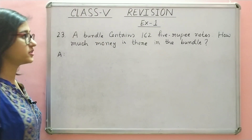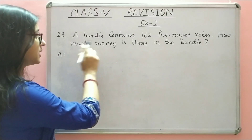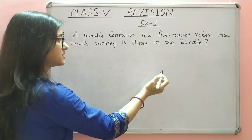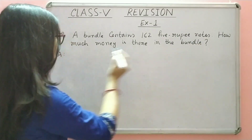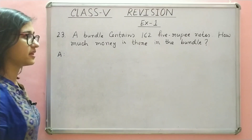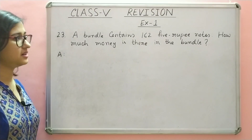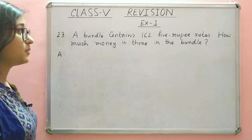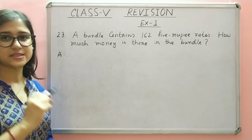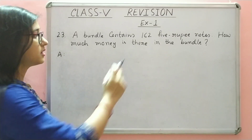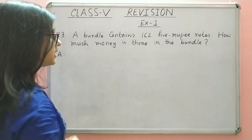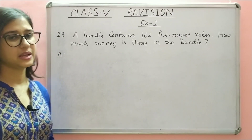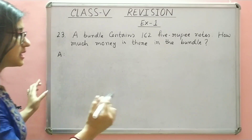Question number 23: A bundle contains 162 five-rupee notes. How much money is there in the bundle? Ek bundle mein 162, 5 rupee notes hai. Toh kitna money hai us bundle mein, bo humi nikalna hai.